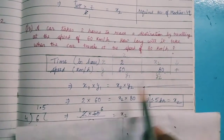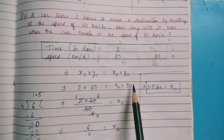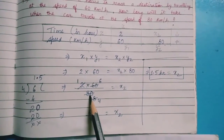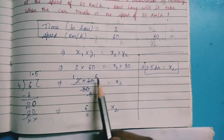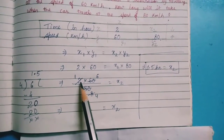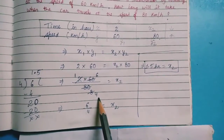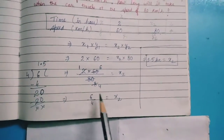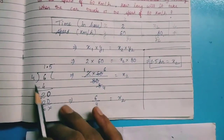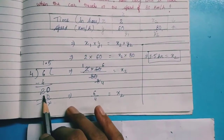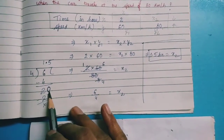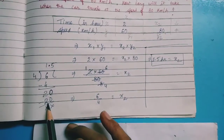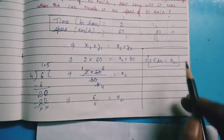Using inverse proportion: x₁ × y₁ = x₂ × y₂. Here x₁ = 2, y₁ = 60, y₂ = 80, and x₂ is unknown. Moving 80 to the other side: from the table of 10, 80 goes 8 times and 60 goes 6 times. From the table of 2: 2 × 8 = 8 and 6 stays. We then divide 6 by 4 — 4 goes once with remainder 2, then placing a decimal and zero: 4 × 5 = 20.